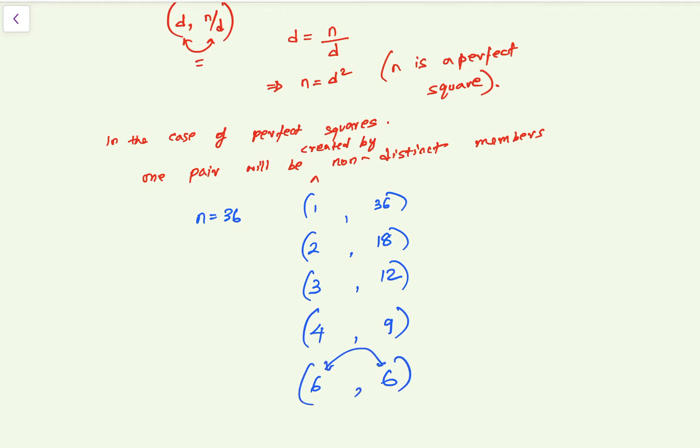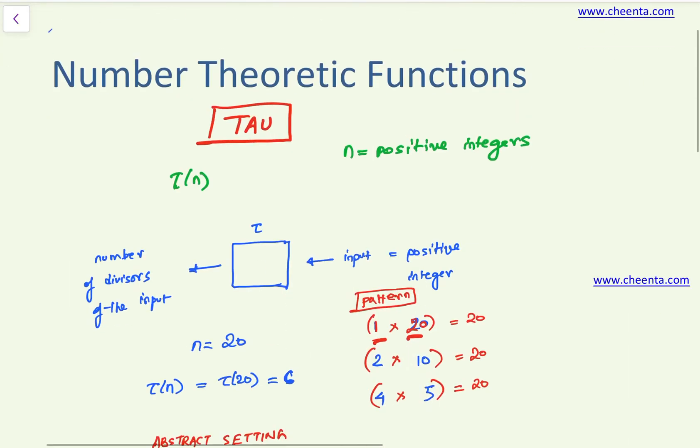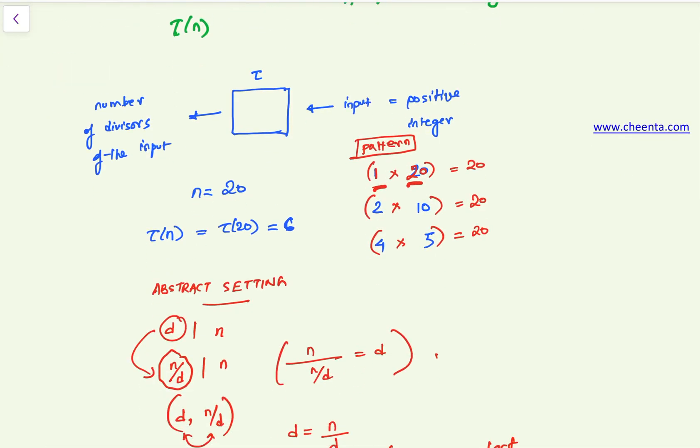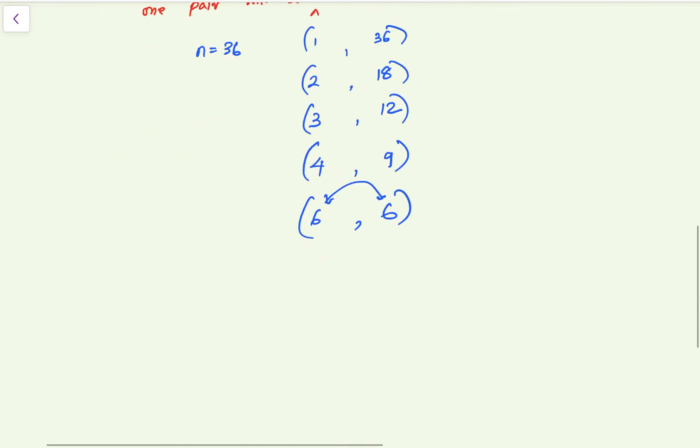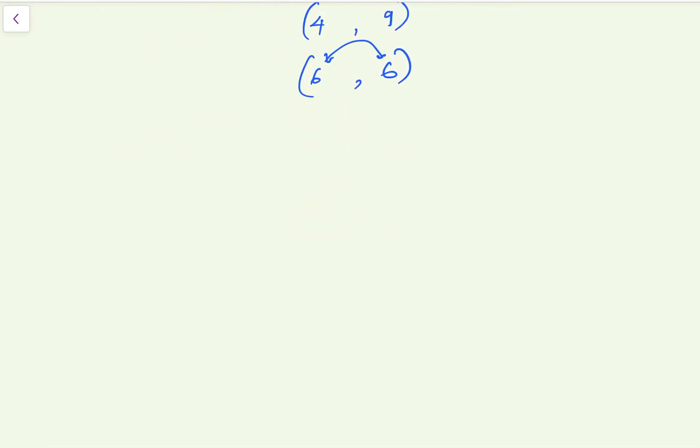So this particular observation, the pairing observation, actually tells us a very interesting fact about tau of n, and it leads to this theorem which says that tau of n is odd if and only if n is a perfect square.